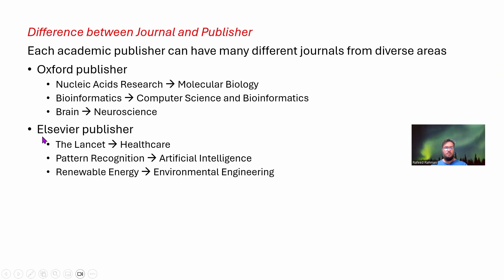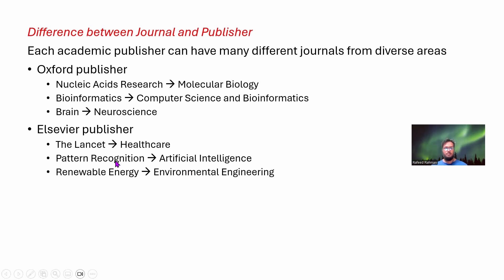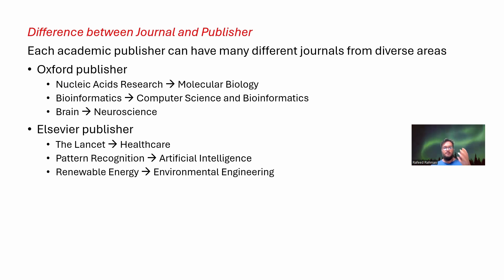Let's take another example. We have the Elsevier publisher which deals with different areas such as healthcare, AI, and environmental engineering, and they belong to different journals such as Lancet, Pattern Recognition, and Renewable Energy. Now if you want to search for the Bioinformatics journal specifically, you need to write in Google 'bioinformatics from Oxford publisher' and you will get the right journal website.